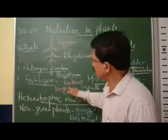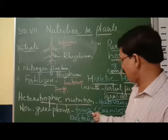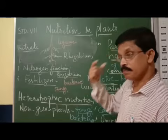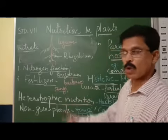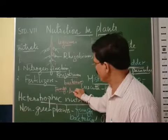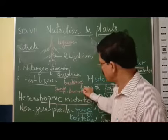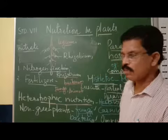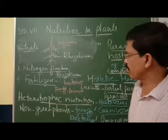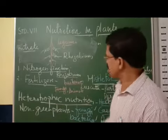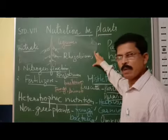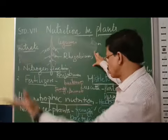Fungi and bacteria are non-green plants. They directly or indirectly depend on other sources for food. Not only fungi, but even animals depend on other sources for their food and cannot synthesize food themselves. This is called heterotrophic nutrition.